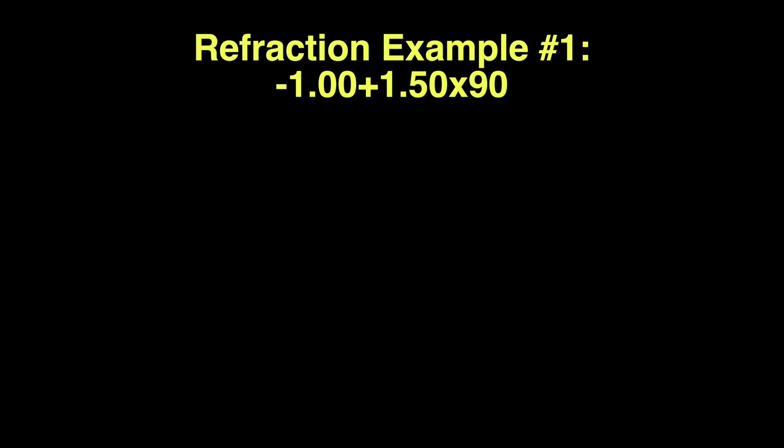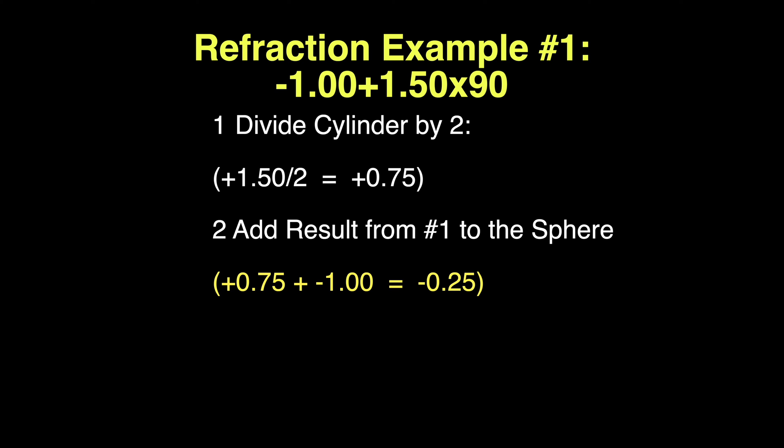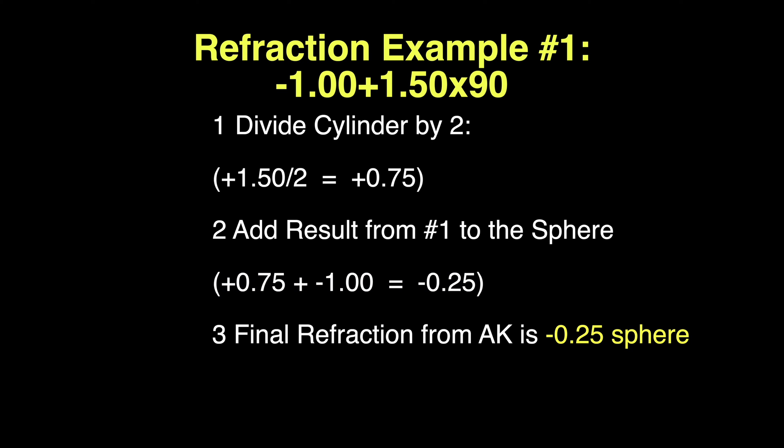For example, let's take a look at some refractions. The first refraction: minus 1 sphere, plus 1.5 diopters of astigmatism at axis 90. To determine if this is a suitable refraction that lends itself to correction by AK, we look at the cylinder — 1.5 diopters — and divide it by 2, which makes plus 0.75. We add that plus 0.75 result to the sphere. So it's minus 1 plus 0.75, which would equal minus 0.25 sphere.